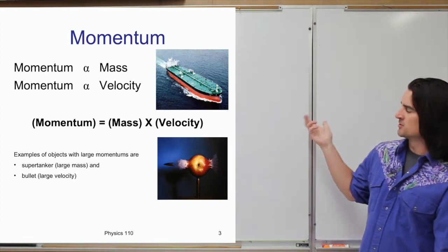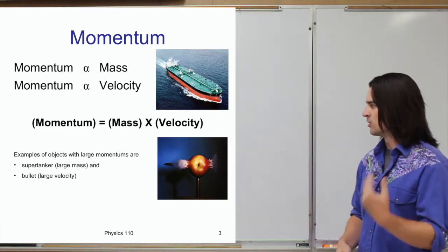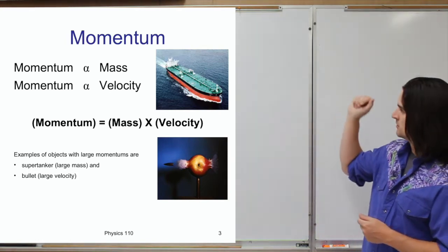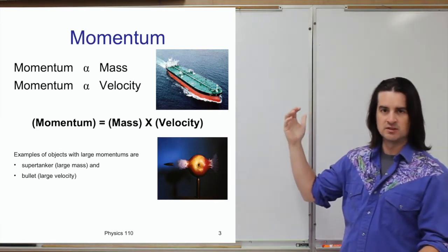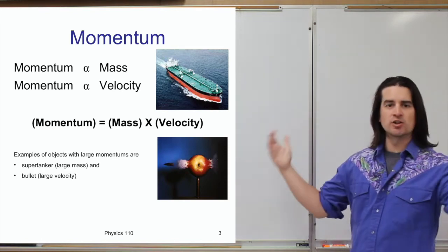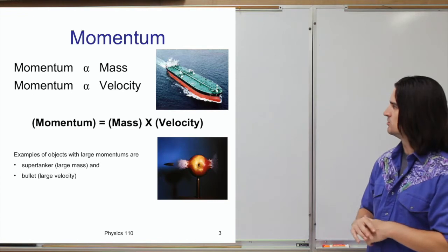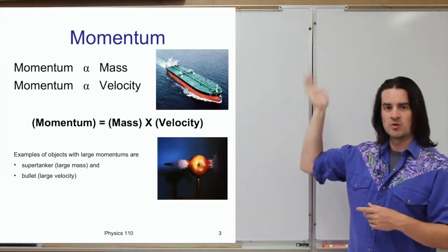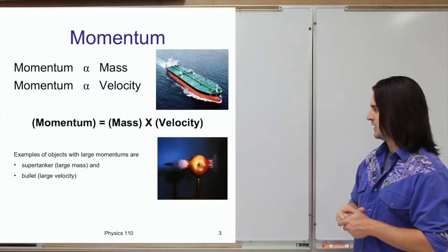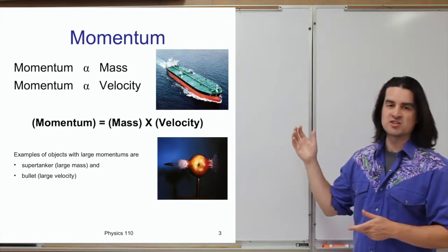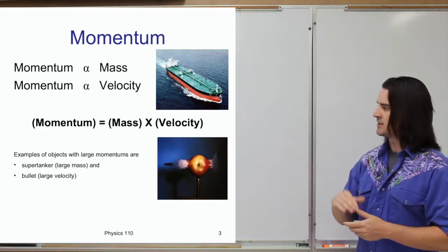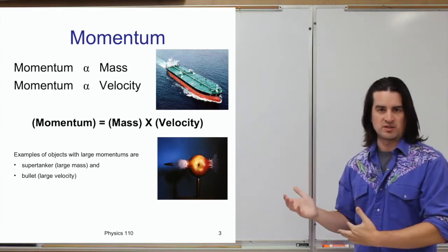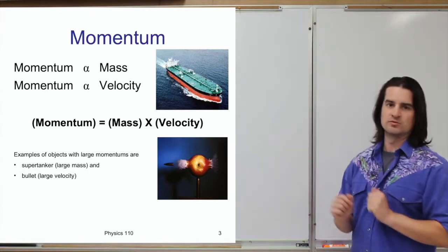Given that momentum is proportional to both mass and velocity, you can have large amounts of momentum in different ways. For instance, a supertanker is not moving very quickly, but it has an incredibly large mass — so even though velocity is not very large, the mass is huge, and so the momentum is huge. You don't want to get in the way of a supertanker. Similarly, a bullet is a very small mass, but it has a very large velocity, so a bullet also has a large amount of momentum — and again, don't want to get in the way of bullets.